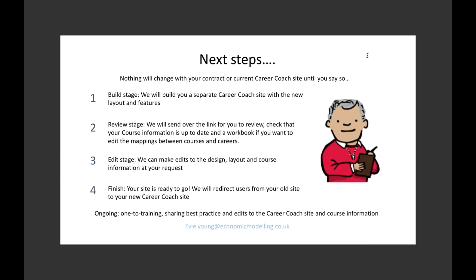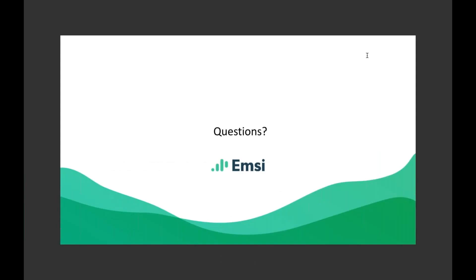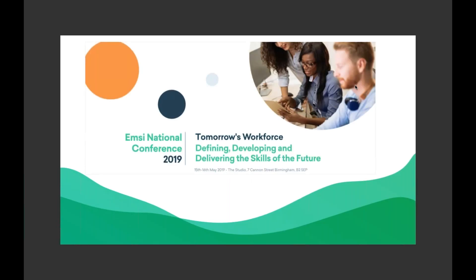Thank you, Evie. We'll now take the opportunity to answer any of your questions. There are no questions at the moment, so that's fine. You've got contact details for John and Evie. Just a quick note to give you some details for our Emsie National Conference this year: Tomorrow's Workforce — Defining, Developing and Delivering the Skills of the Future. We've got some really good speakers lined up and great workshop themes, so definitely recommended. Early bird registration finishes today. It's the 15th and 16th of May this year in Birmingham — have a look on the website where a conference banner will take you straight to the page with all the details.